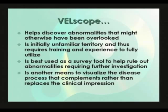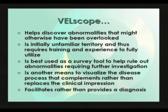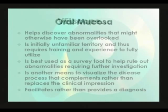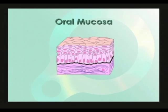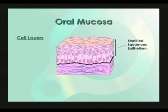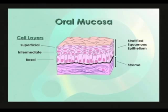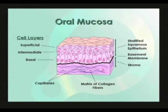VELscope is another means to visualize the disease process that complements rather than replaces the clinical impression, and facilitates rather than provides a diagnosis. Before going further, let's remind ourselves of some basic facts. The oral mucosa consists primarily of two layers: the epithelium and the stroma. The epithelium — more completely called stratified squamous epithelium — consists of basal, intermediate, and superficial squamous cells. The stroma is separated from the epithelium by the basement membrane and consists primarily of connective tissue, mostly collagen, and also contains capillaries.